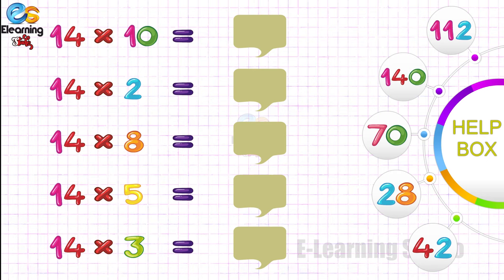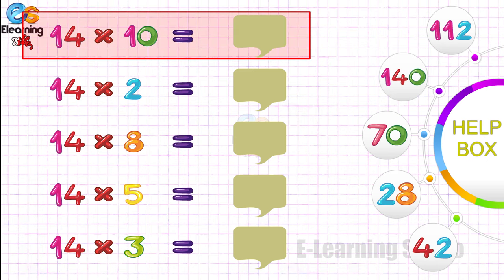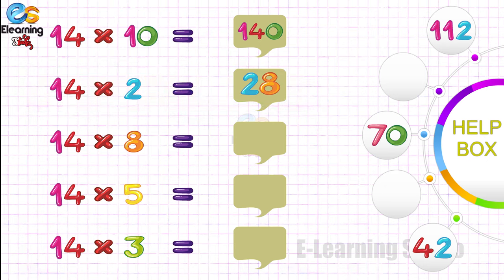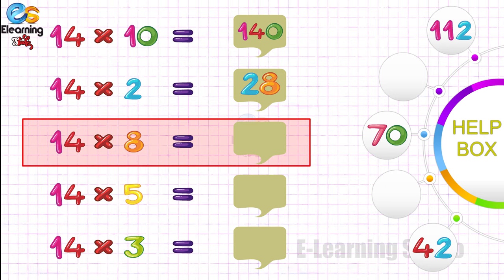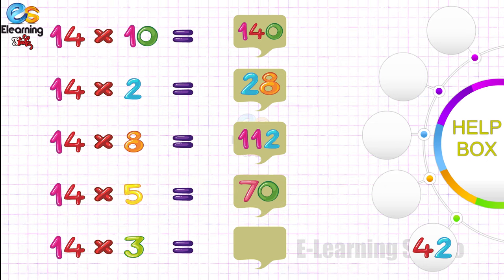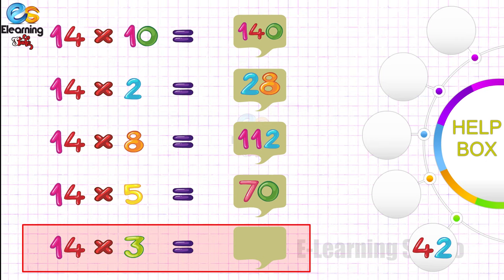इस activity में आपको सही आंसर को बॉक्स के अंदर fill करना हैं, तो शुरू करें। 14 10's are 140 — राइट आंसर। 14 8's are 112 — राइट आंसर। 14 5's are 70 — राइट आंसर। 14 3's are 42 — राइट आंसर। 14 1's are 14.